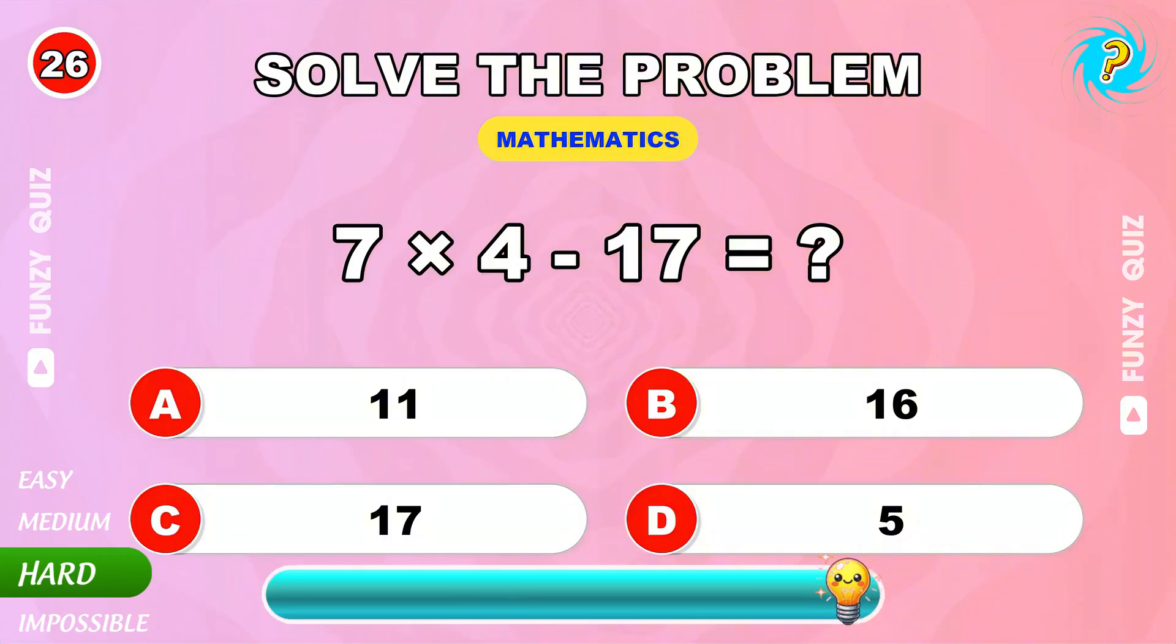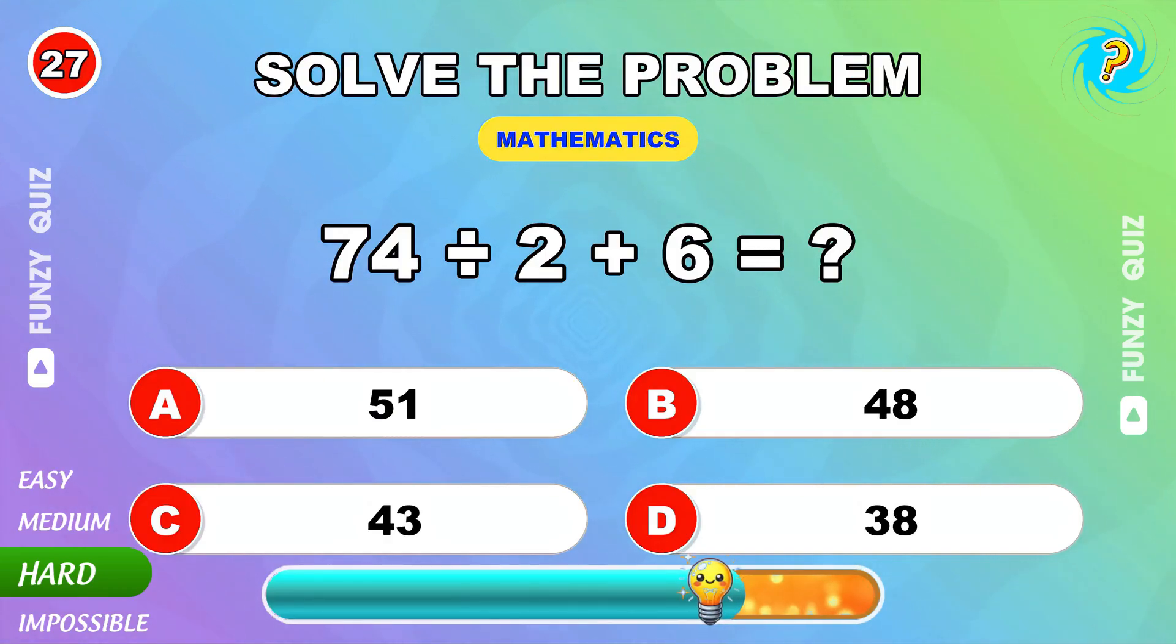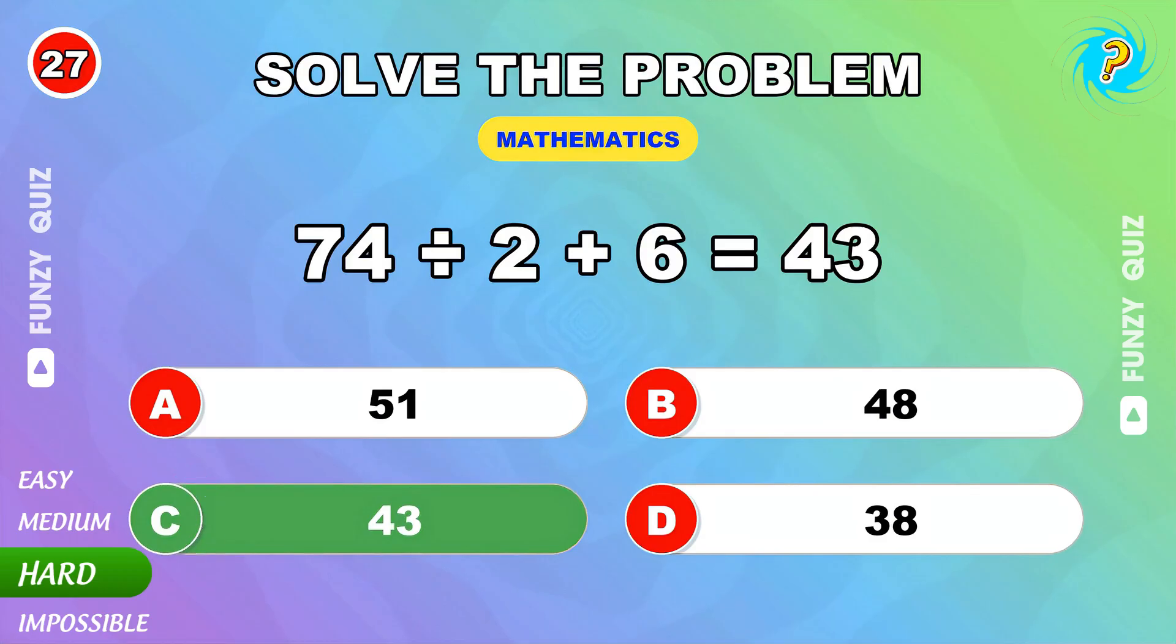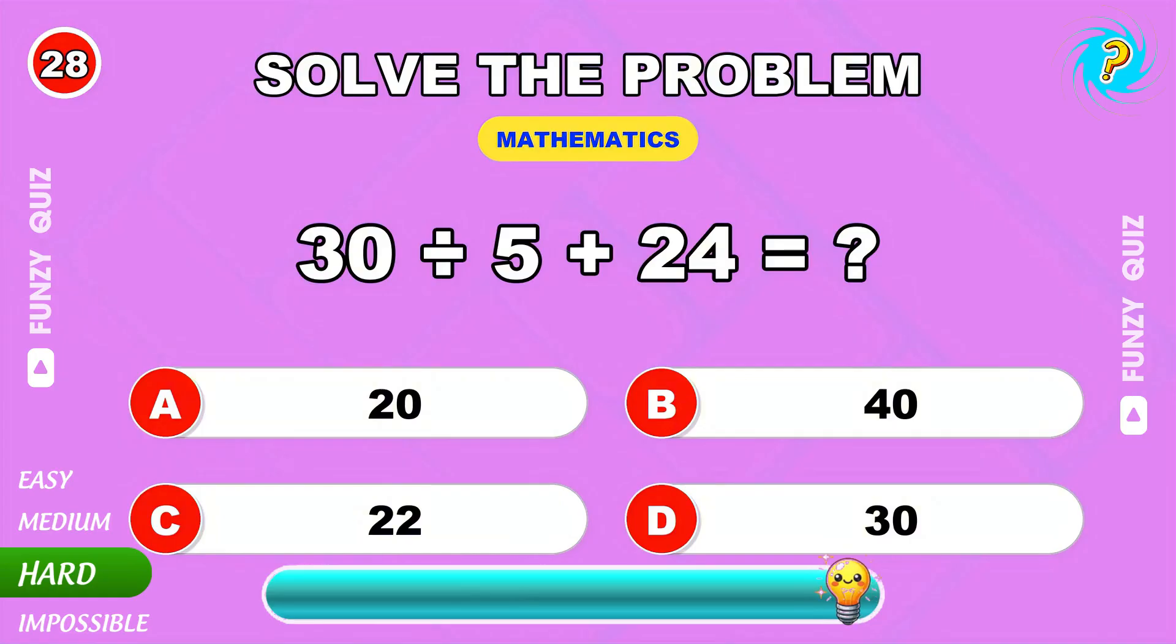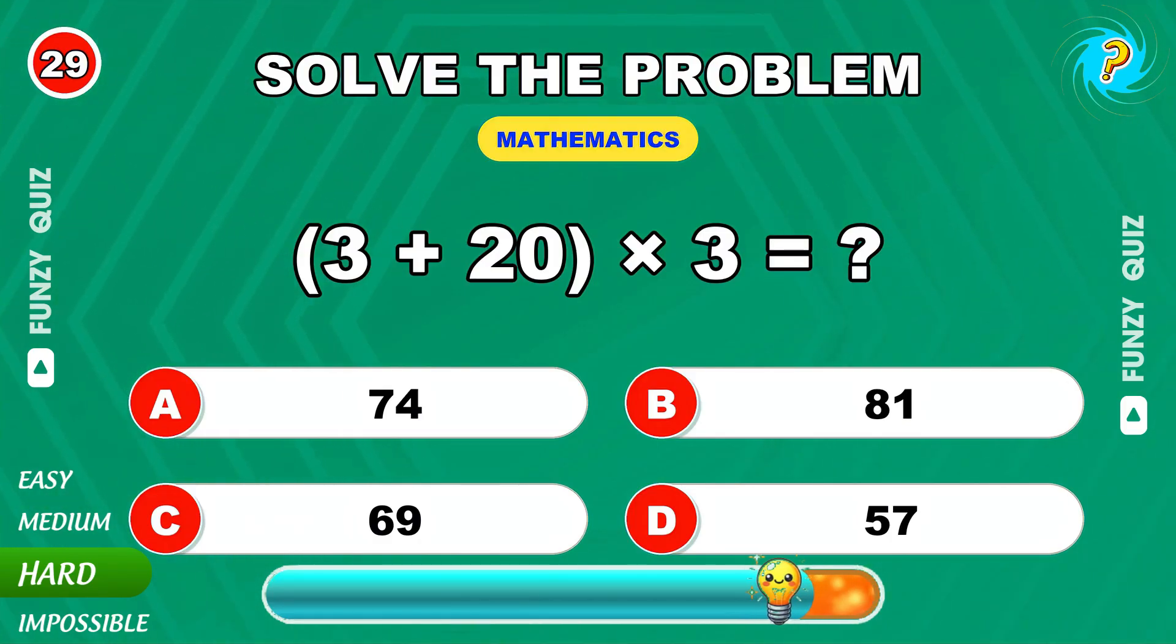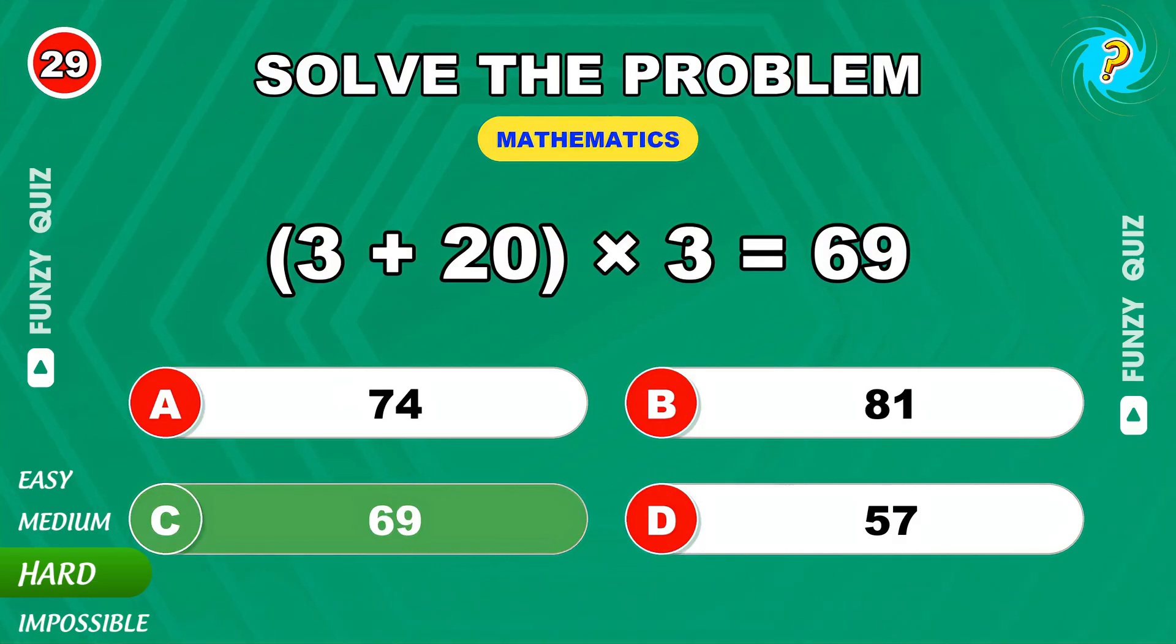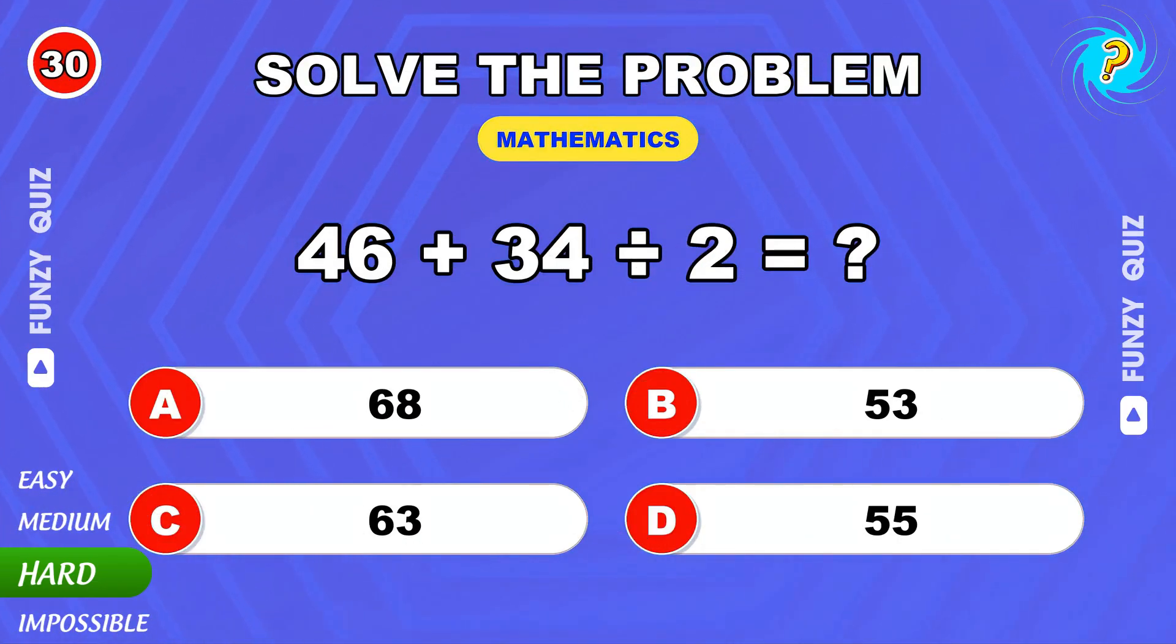What about 7 times 4 minus 17? The answer is 11. 74 divided by 2 plus 6. 43. 30 divided by 5 plus 24. 30. 3 plus 23. 69.